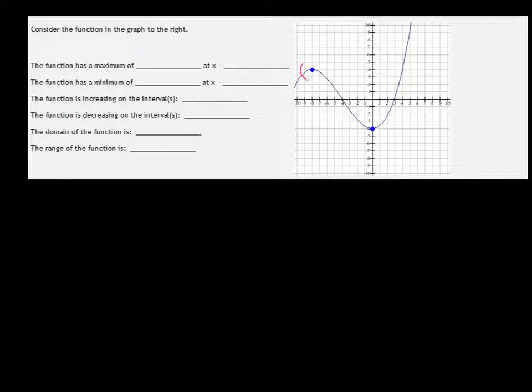Like this point right here, negative 8, 4, that is a local maximum because that's the highest point in that small area.